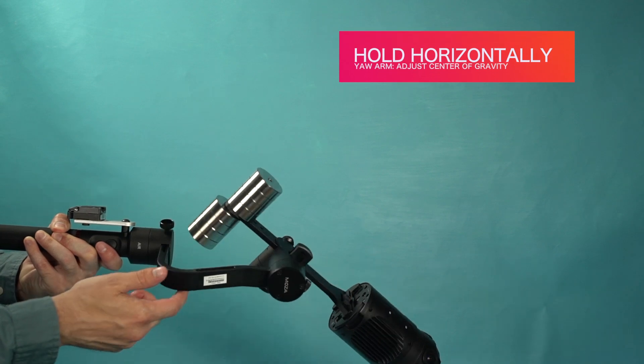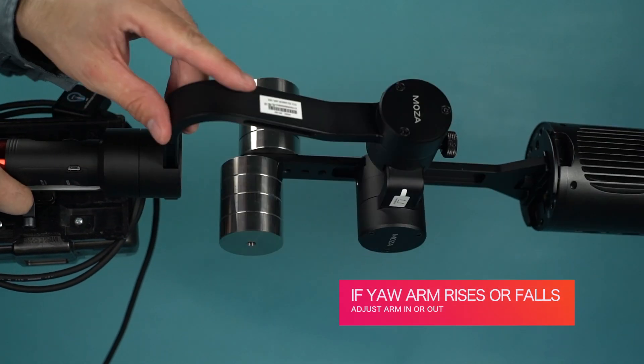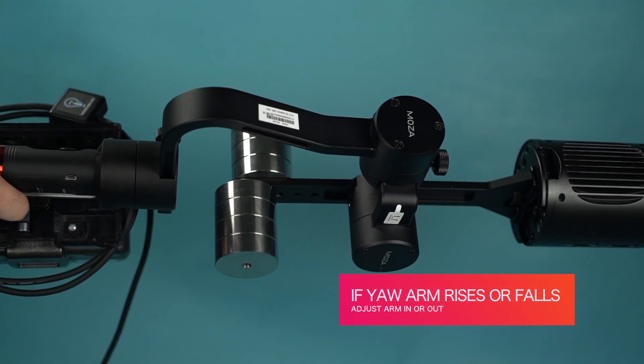The last adjustment is yaw. To test the center of gravity, hold the stabilizer horizontally and watch the yaw arm. If the yaw arm rises or falls, it will need to be adjusted in or out.